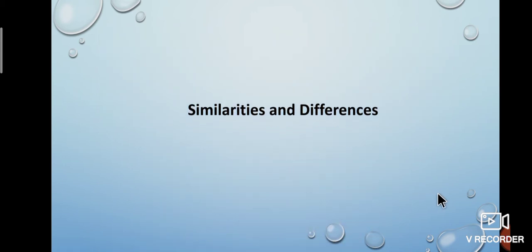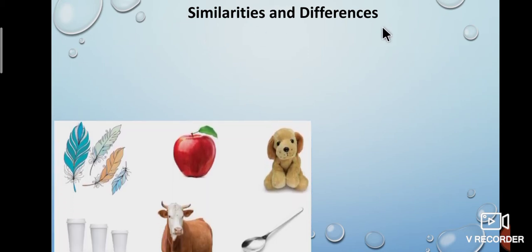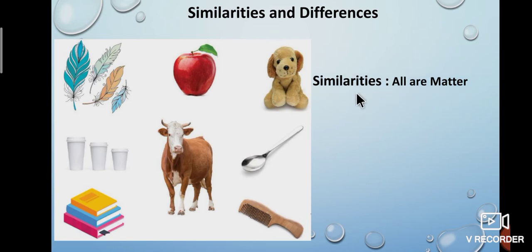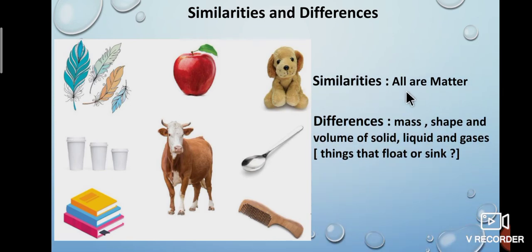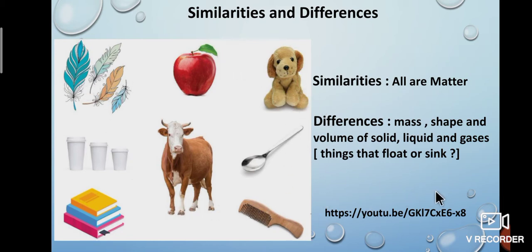Let us see the similarities and differences of states of matter. The similarity is that all objects are made of matter. In the case of differences, solid, liquid and gases possess different mass, shape and volume. For example, from the picture, various objects can be grouped into those that float or sink. Feather, plastic comb and paper cup are floating materials; apple, glass and piece of stone sink. To know more details about mass, shape and volume of states of matter, see the link below.